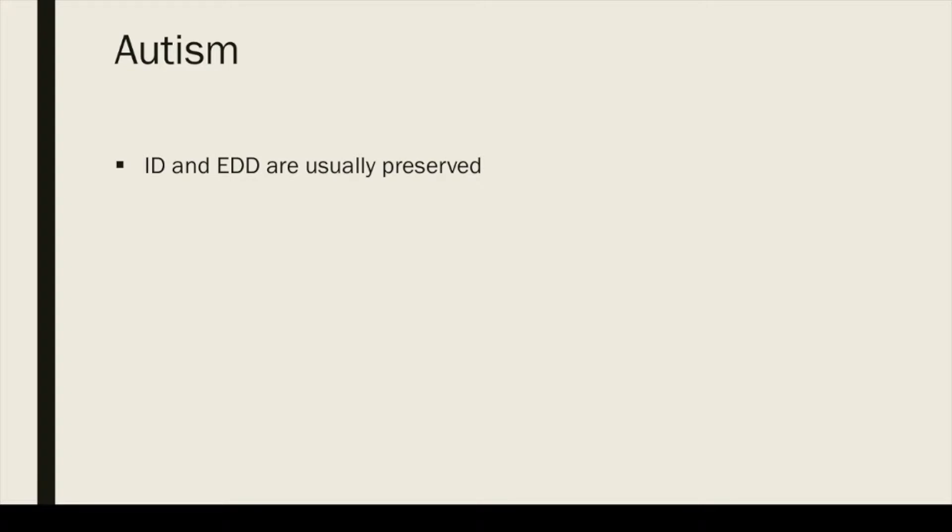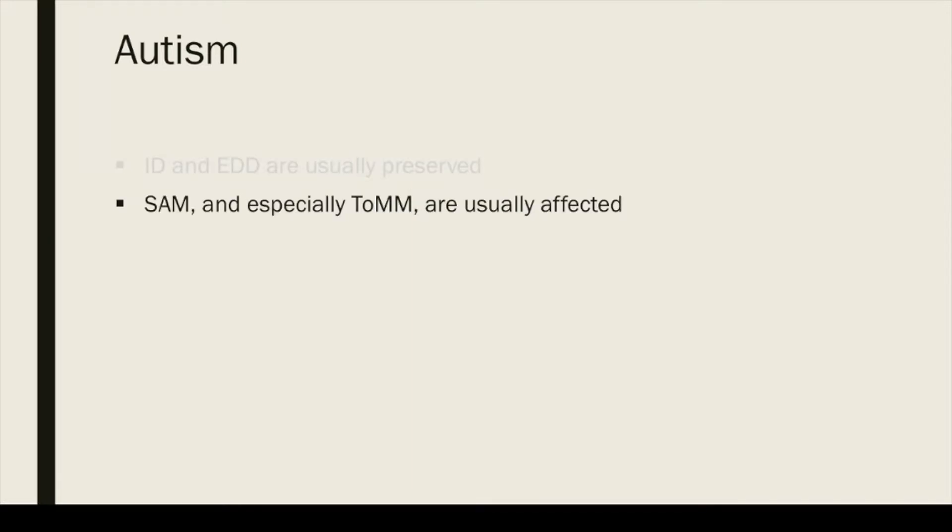According to Baron-Cohen, ED and EDD are usually preserved in autism. For instance, autistic children spontaneously use volitional verbs like 'want,' and they are able to determine gaze direction and detect when other people are looking at them. He also claims that TED might function in autistic children, but in any case it is delayed. However, SAM, and especially TOM, are usually affected.